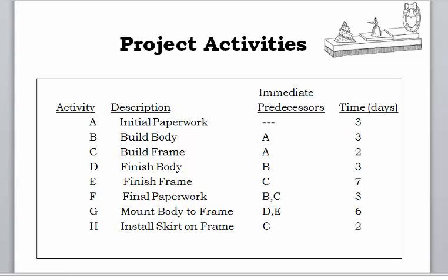Hello everyone. In this video we'll learn how to solve a critical path problem. So given a list of activities, their immediate predecessors and their single estimate duration, how can you calculate your early start, early finish, late start, late finish times, how can you identify which activities are critical and non-critical, and calculate your project's completion time. What you see on the screen is a project about making parade floats.